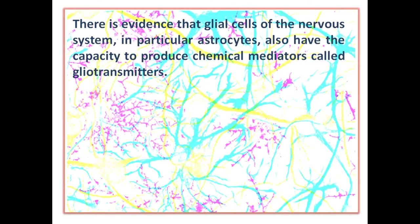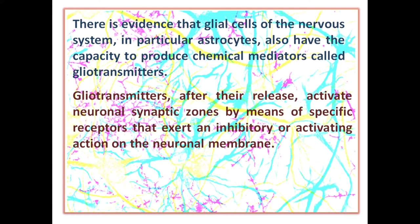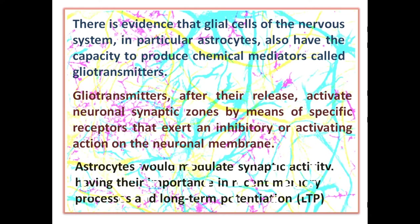There is evidence that glial cells of the nervous system, in particular astrocytes, also have the capacity to produce chemical mediators called gliotransmitters. After their release, gliotransmitters activate neuronal synaptic zones by means of specific receptors that exert an inhibitory or activating action on the neuronal membrane. Astrocytes would modulate synaptic activity, having their importance in recent memory processes and long-term potentiation, LTP.